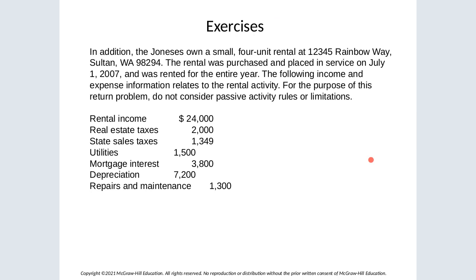For the tax return due with this chapter: you don't need to prorate any items — all listed items are reported on Schedule E except state sales tax, which is not reported on Schedule E. The net rental income also qualifies for the 20% QBI deduction claimed on Form 8995.